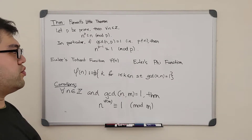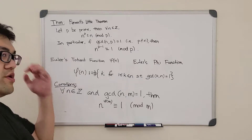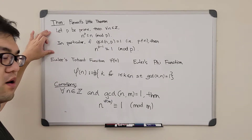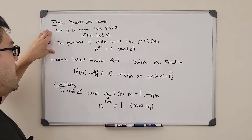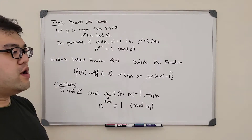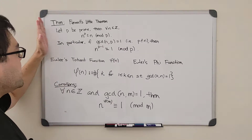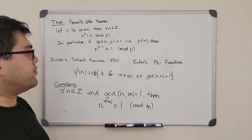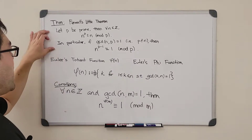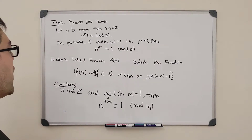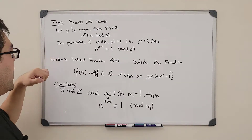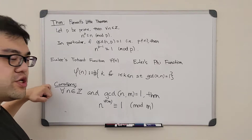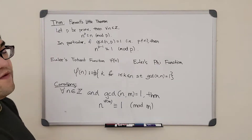Since n is not congruent to zero, we are allowed to do what's called division. The actual proof of the theorem is quite long, so I'm not going to explain it here — we're just assuming it is true in this video. Later I'll try to make another video to prove why it is true.